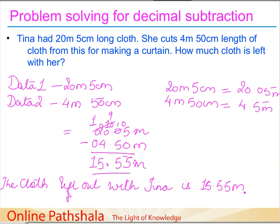We can also convert 15.55 meters back to meters and centimeters: that is 15 meter 55 centimeter of cloth left with Tina. With this we complete the decimal subtraction problems. Thank you.